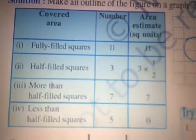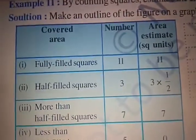Prepare the table: fully filled squares = 11, area estimate = 11 into 1 = 11. Half filled squares = 3, area estimate = 3 into one-half = 3 upon 2. More than half filled squares = 7, area estimate = 7 into 1 = 7. Less than half filled squares = 5, area estimate = 5 into 0 = 0.